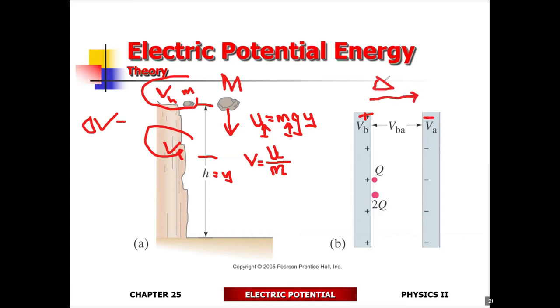So this is your voltage difference. Your voltage difference is going to represent the strength of the electric field times the separation. This is the second way of looking at it. So voltage or potential difference means the same as voltage — it means the same thing.